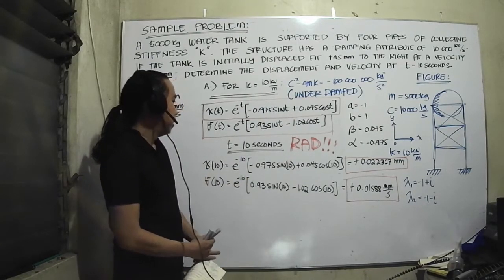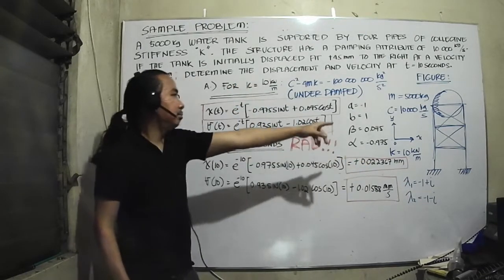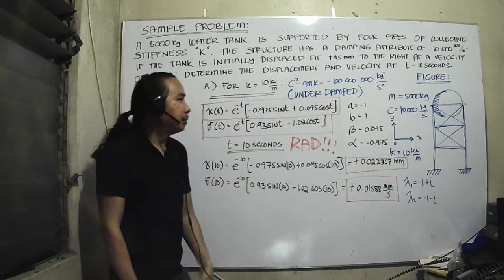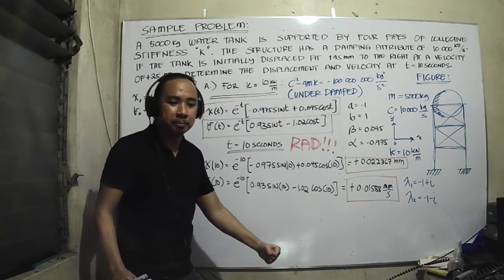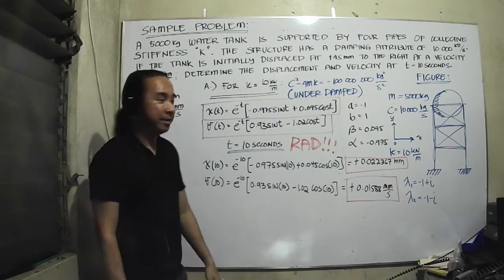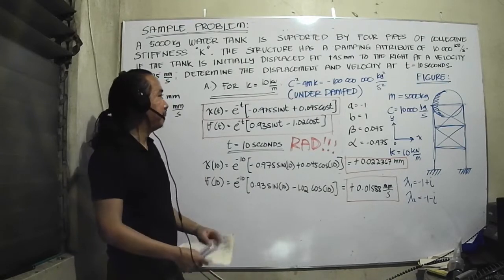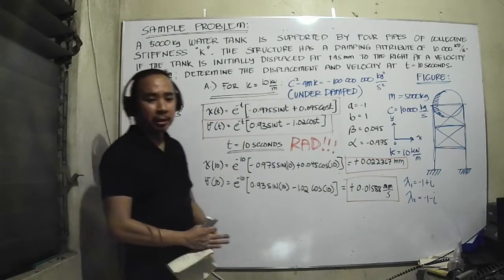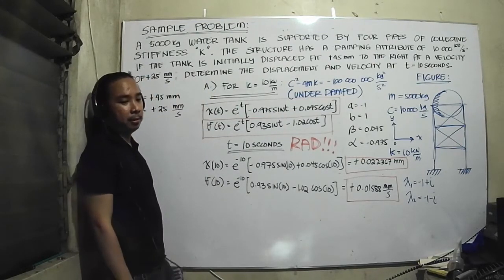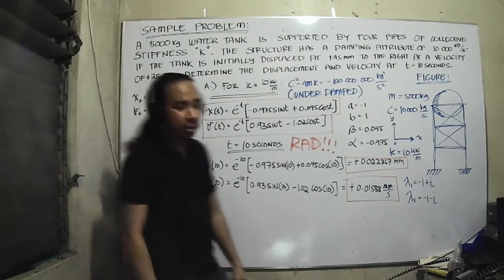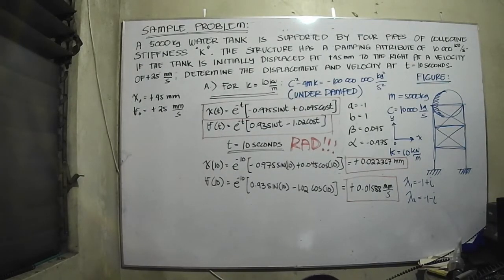So these are the numbers. This is for k equals 10 kN. Let's try investigating other cases.